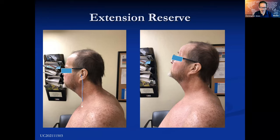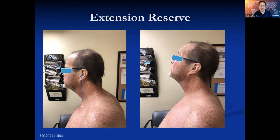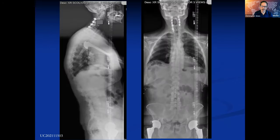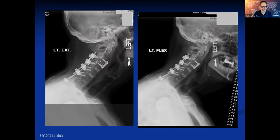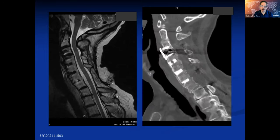Another concept we've been looking at for our classification is extension reserve. We find patients can become symptomatic with this — they have difficulty looking up, and that limits them. It shows exactly how much extension reserve these patients have. This is most useful in my PJK or PJF patients. If a patient has no extension reserve, I think they're probably going to come to surgery. If somebody still has good extension reserve, they may not need surgery anytime soon. This is a patient we operated on for that problem — he had a three-column osteotomy, and we moved his head back over his thoracic inlet.